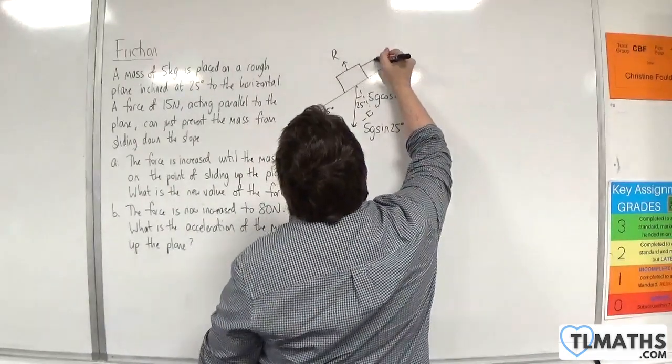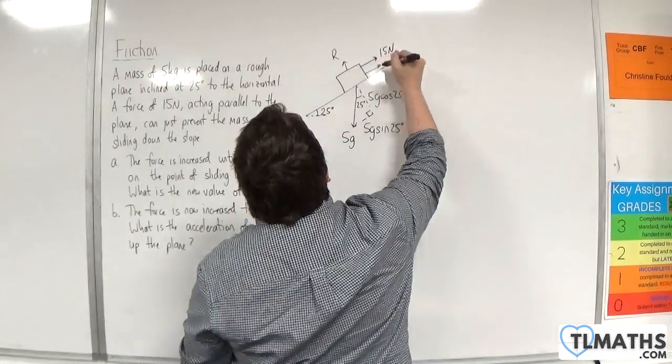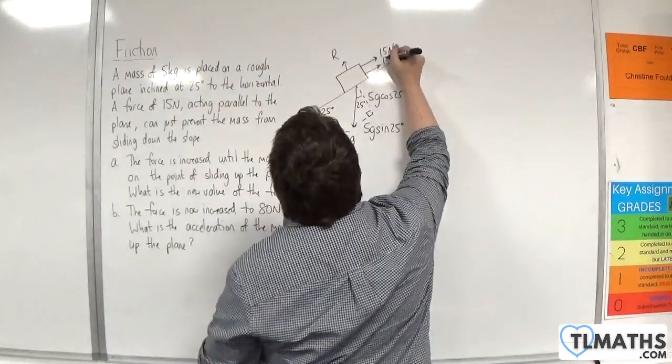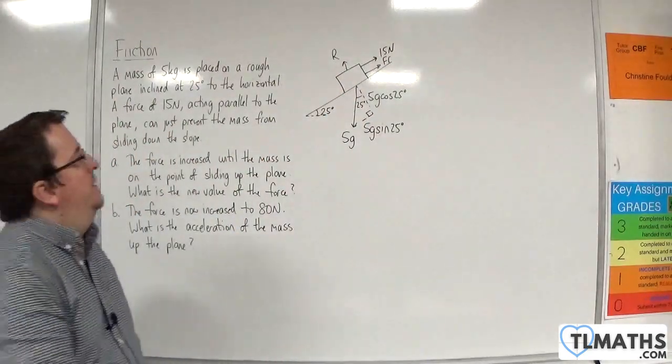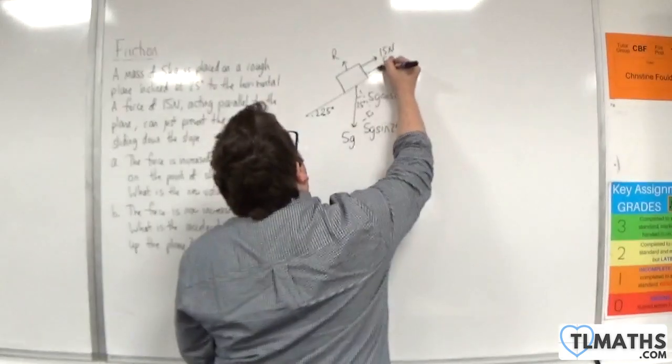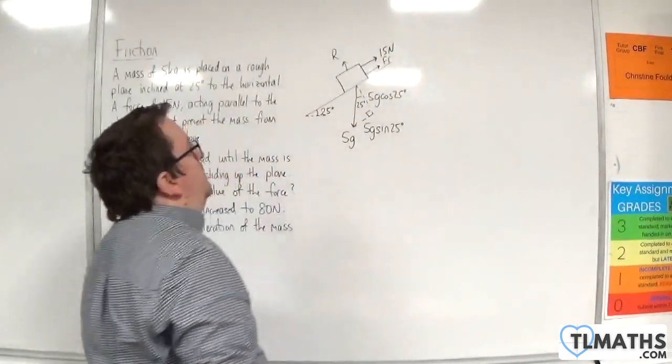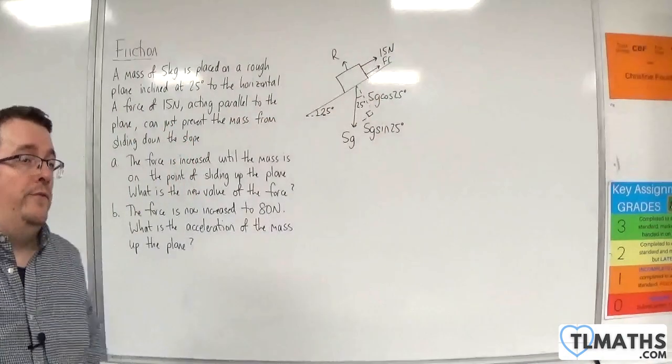There is this force of 15 newtons working against that, but because it's trying to go down the slope, the frictional force will be up the slope. So the friction is actually going in the same direction as the 15 newton force.